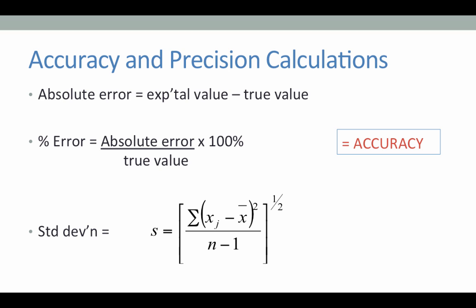Precision is calculated as standard deviation and it is described by this large formula here which you will be asked to learn throughout the course and apply. Standard deviation, or S, is equal to the square root of the sum of each value minus the average value squared divided by the number of values minus one. We will go over this calculation in more detail in study guide A.